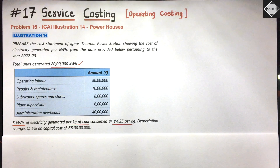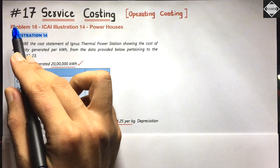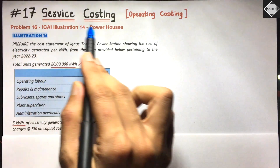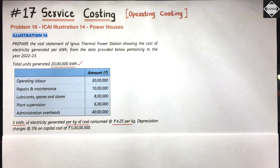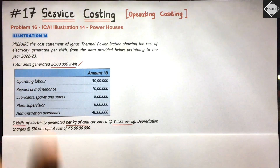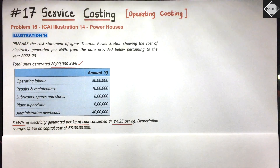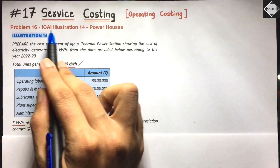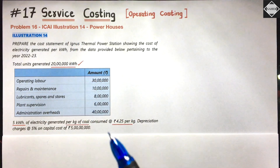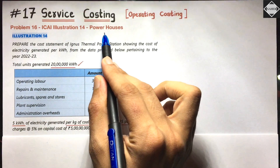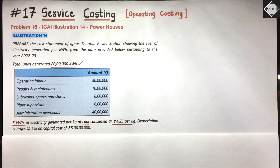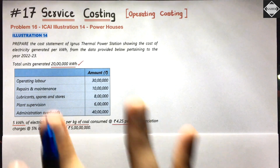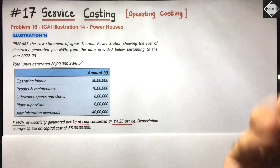Hi everyone, welcome back to Sahab Academy. Today in the 17th video of the Service Costing chapter, we are going to solve our 16th problem of the series. The question is from ICAI study material Illustration 14, which is based on powerhouses — powerhouses which generate electricity.